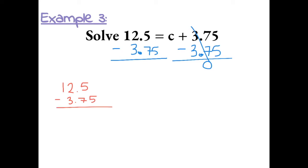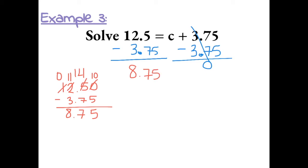When adding or subtracting with decimals, you have to line up the decimal. We can add a 0 here. Working through the subtraction: borrowing as needed, we get 8.75. Bring down the equal sign and the variable, so c is equal to 8.75.